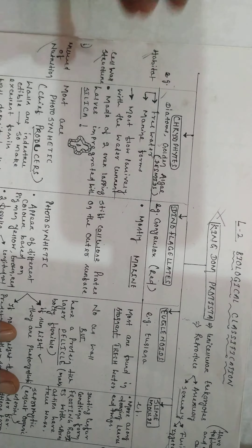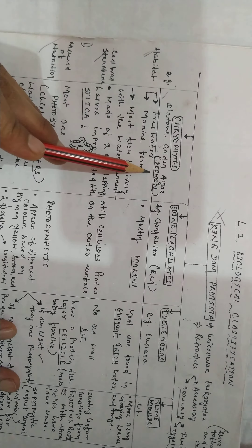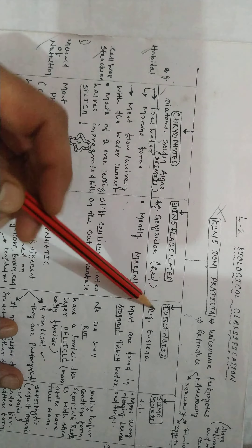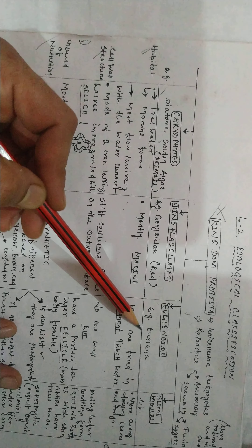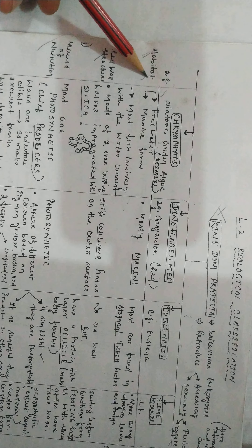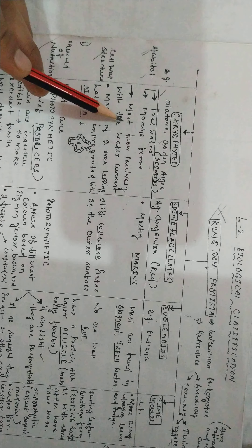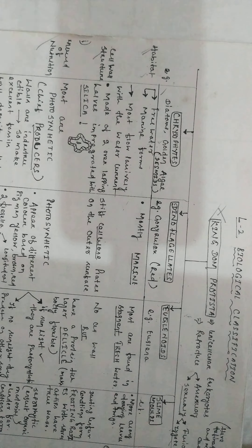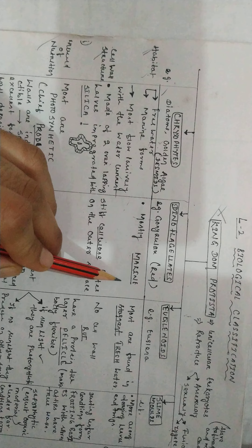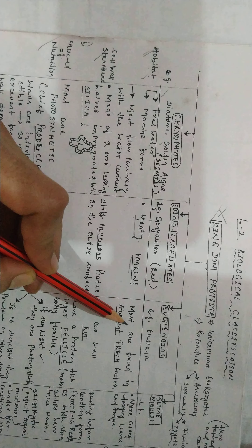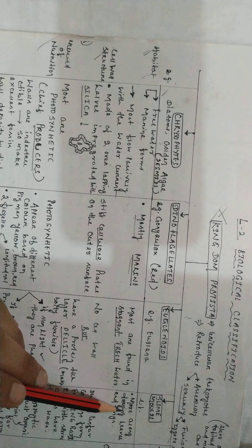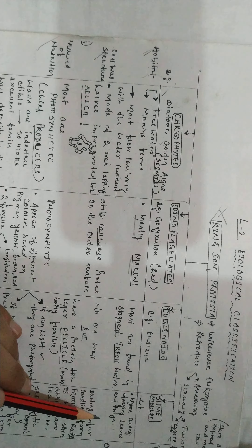Examples of chrysophytes are diatoms and golden algae. Their habitat is freshwater or marine forms, and they mostly flow passively with the water current. Dinoflagellates are mostly marine. Euglenoids are mostly found in stagnant freshwater. Slime molds are mostly found along decaying leaves or twigs.